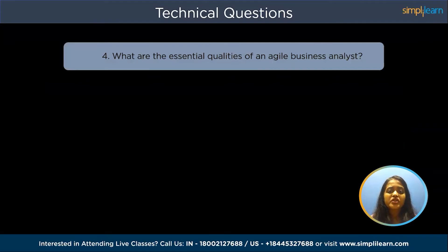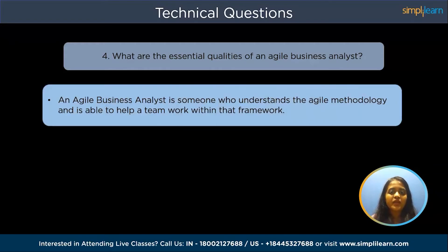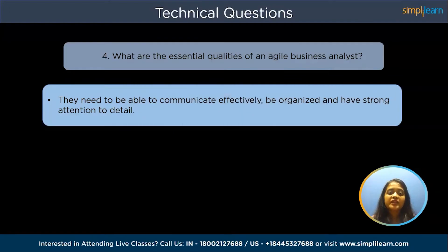What are the essential qualities of an agile business analyst? Agile is a very famous methodology nowadays, and every company uses it for the implementation of projects. An agile business analyst is someone who understands agile methodology and is able to help a team work within that framework. They need to communicate effectively, be organized, have strong attention to detail, work well under pressure, and be able to adapt to changes quickly.